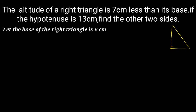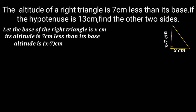Let the base of the right triangle be x cm. Its altitude is 7 cm less than its base, therefore the altitude is x minus 7 cm.